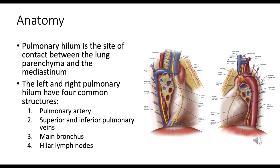The pulmonary hilum is the indented area on the medial side of each lung where structures like the primary bronchi, blood vessels, and lymphatic vessels enter or leave the lung. Located on the medial aspect of each lung facing the heart, the hilum effectively acts as a gateway to the lung.